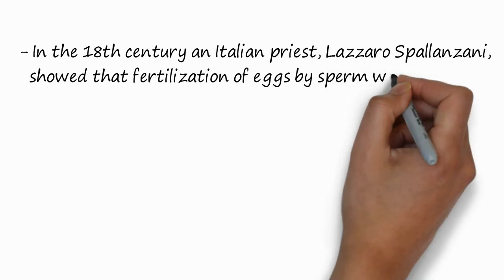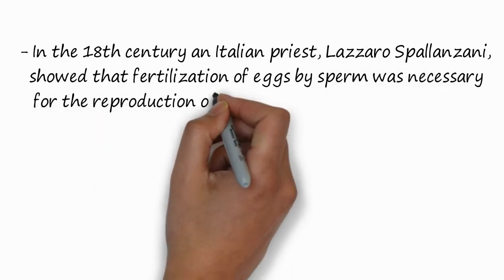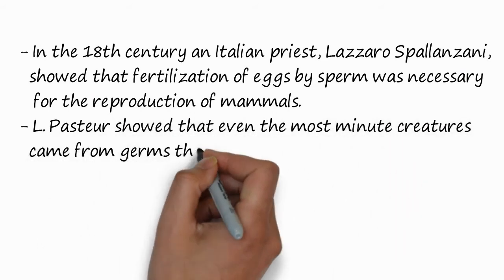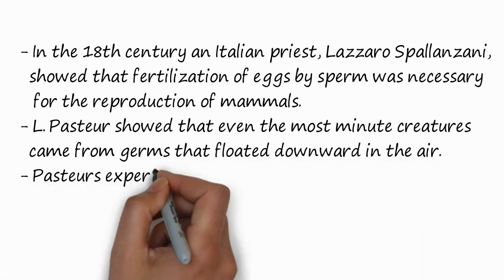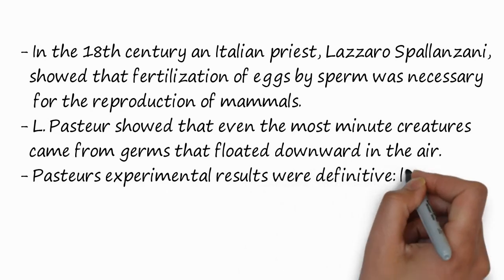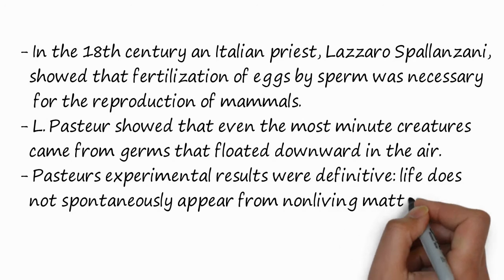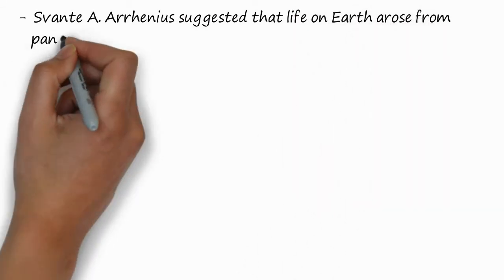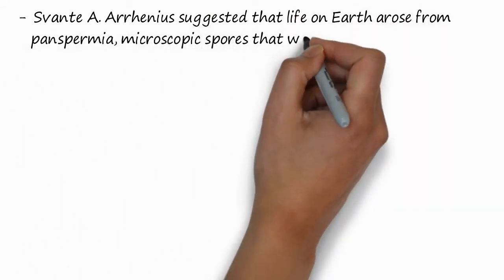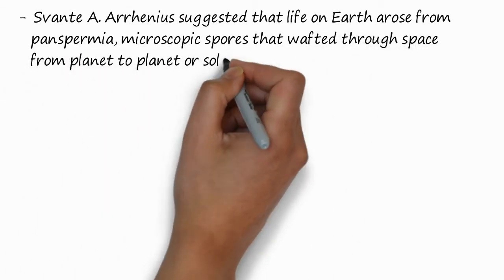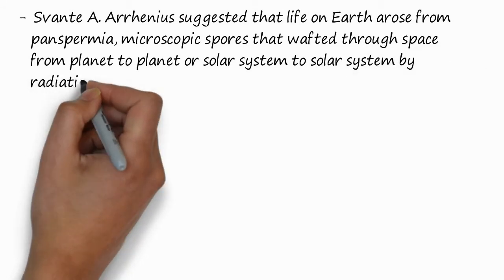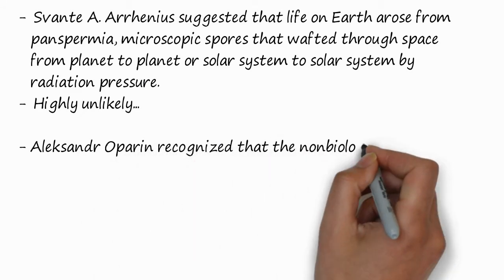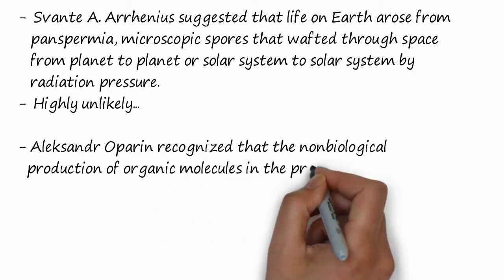This theory is called Panspermia, meaning all life originated from one cell. In the 18th century, Italian priest Lazaro Spallanzani showed that fertilization of the egg by sperm was necessary for the reproduction of mammals. Similarly, Louis Pasteur showed that even the most minute creature came from germs that floated downward in the air. Pasteur's experiment results were definitive: life does not spontaneously appear on earth.